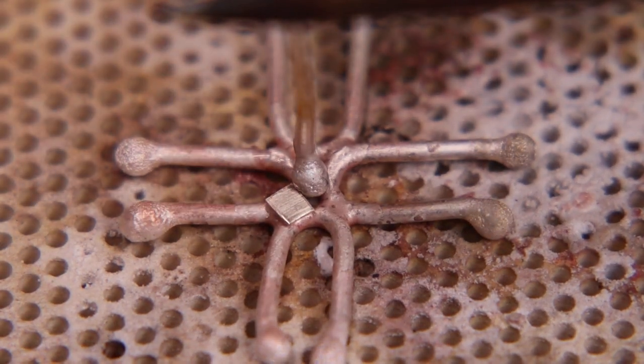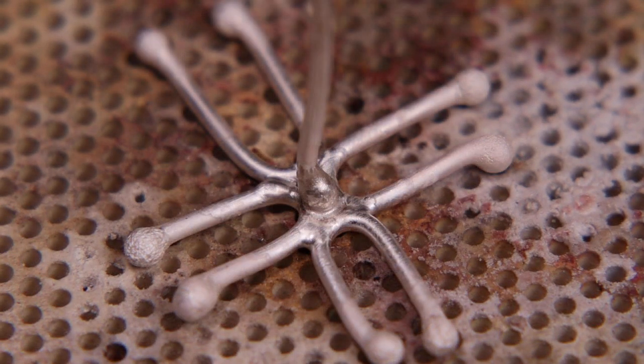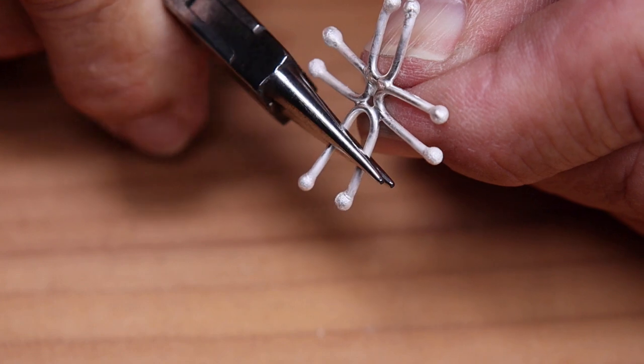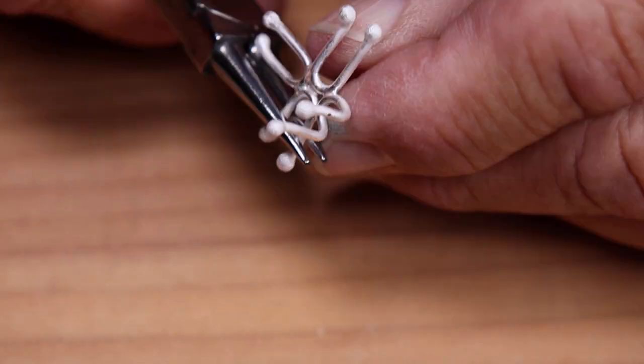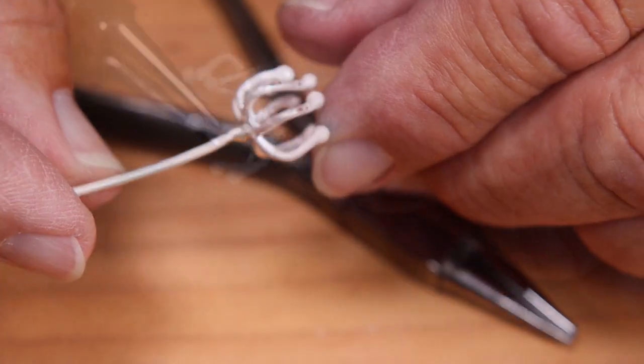Then add a stem to it with medium solder. And there we have our form ready to go. So we'll bend them into shape and I'll repeat this four more times.